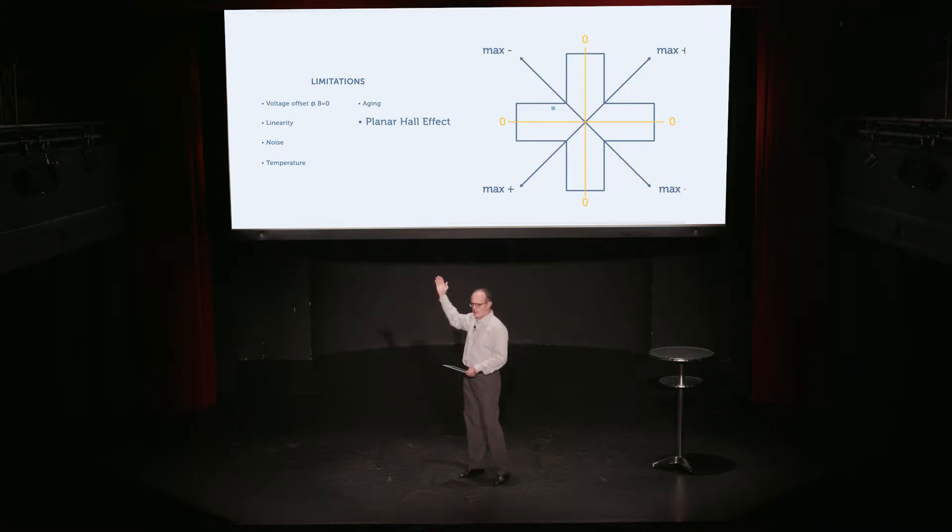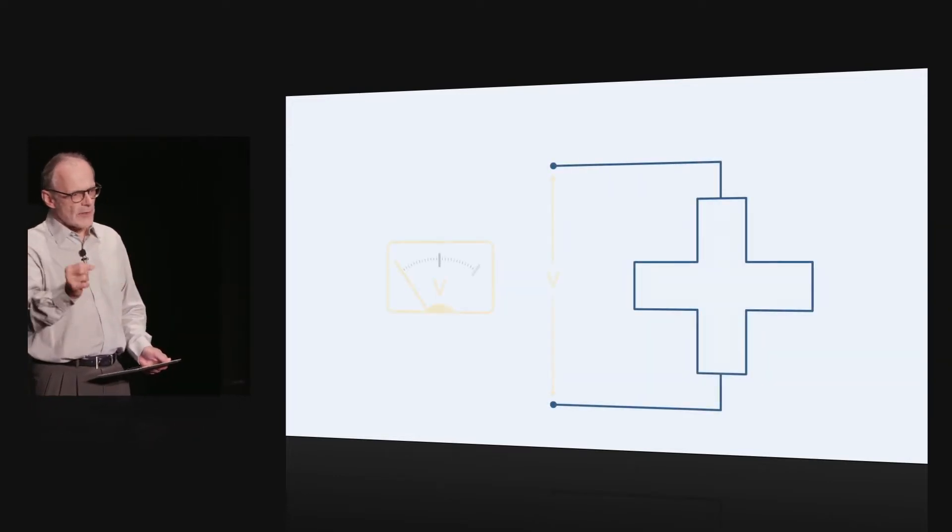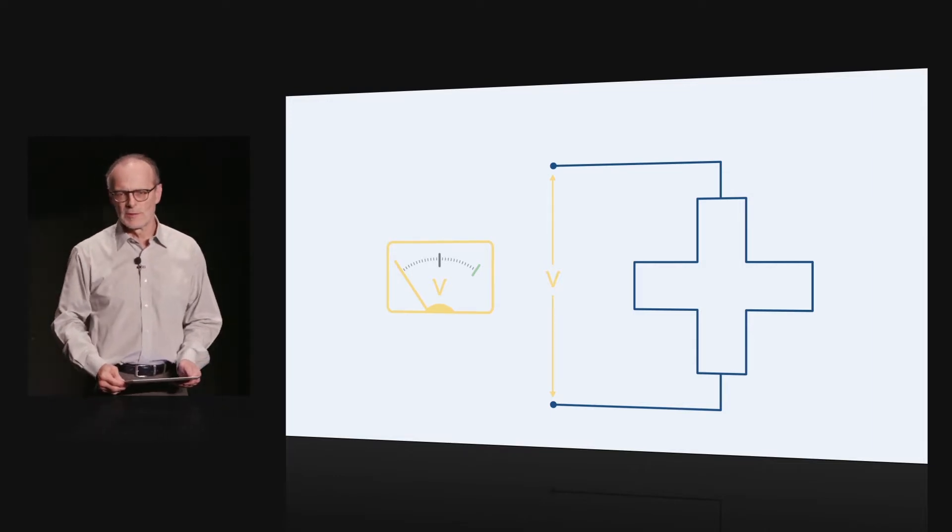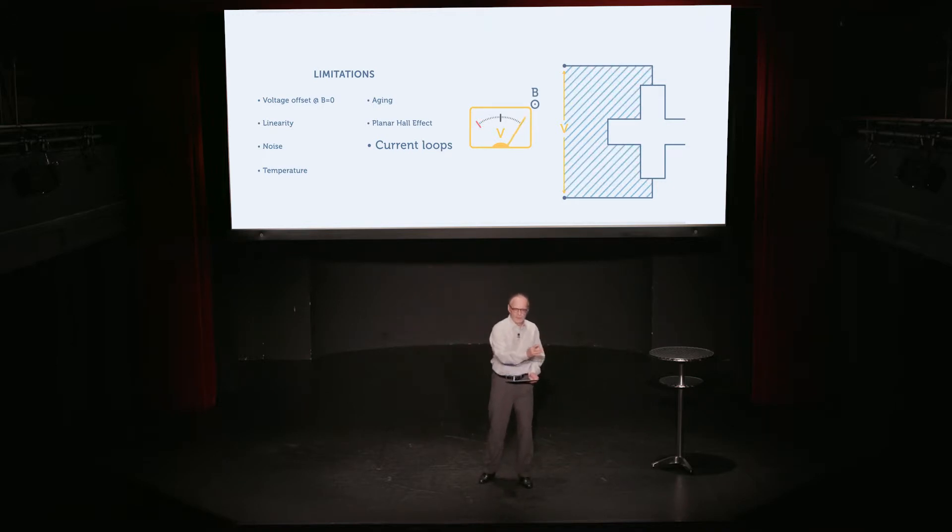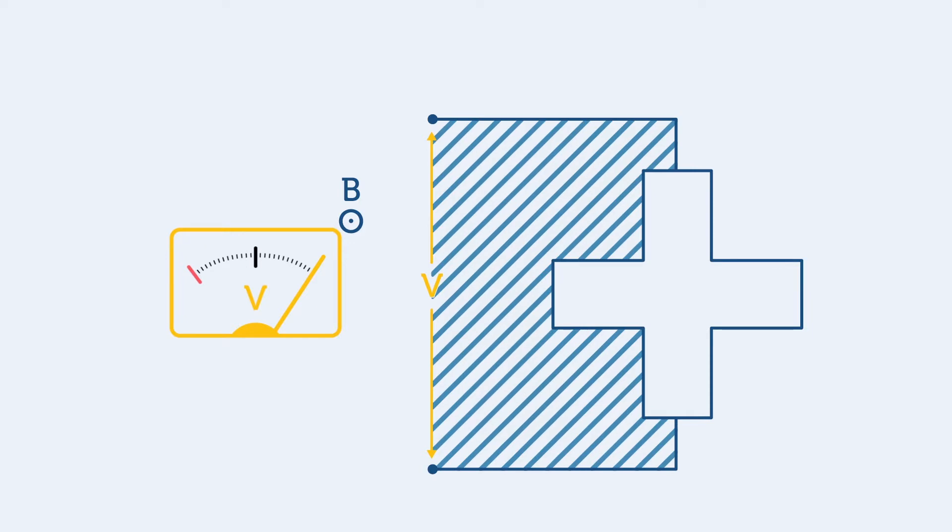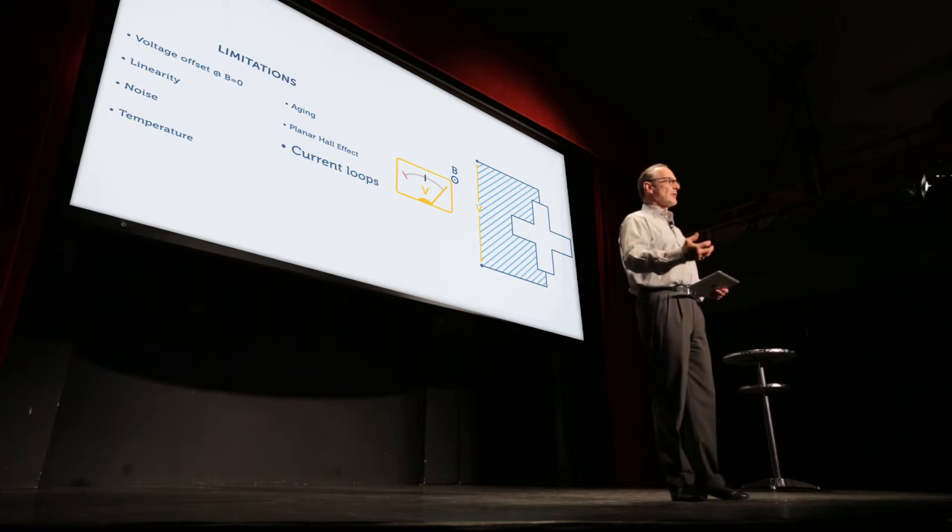Then the leads of the Hall device, the wires that actually lead to the current and the voltage terminals, they are subject to Faraday induction. So as this device moves through a non-uniform field, it will induce voltages that have nothing to do with the Hall voltage. There are just voltages induced on the terminal.